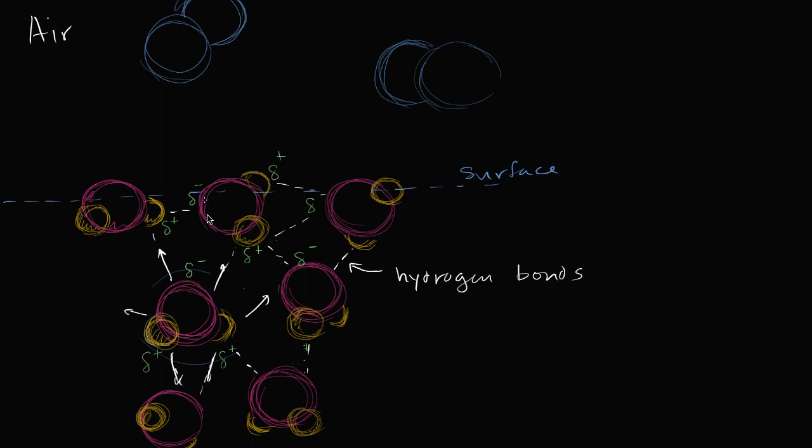But if you look at the molecules on the surface, sure they might have stuff pulling down on them. They might have stuff pulling them to the side. But they don't have anything pulling on them from above. And because of this, you could imagine that they're able to get a little bit more densely packed, that they're able to get a little closer to their neighbors.